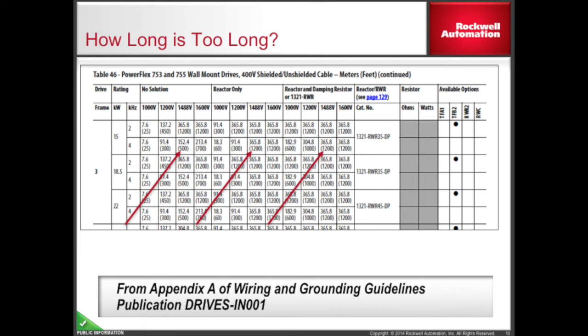Once the motor power rating and winding voltage insulation rating is known, the maximum motor cable length can be found. For an example, look at a 15 kW motor with a carrier frequency of 4 kHz and a motor insulation of 1,488 volts. With only wire between the drive and the motor, the motor can be up to 500 feet away. With an output reactor, the drive can be 1,200 feet away. In this scenario, adding a damping resistor to the output reactor would not result in any additional motor cable length over just a reactor.